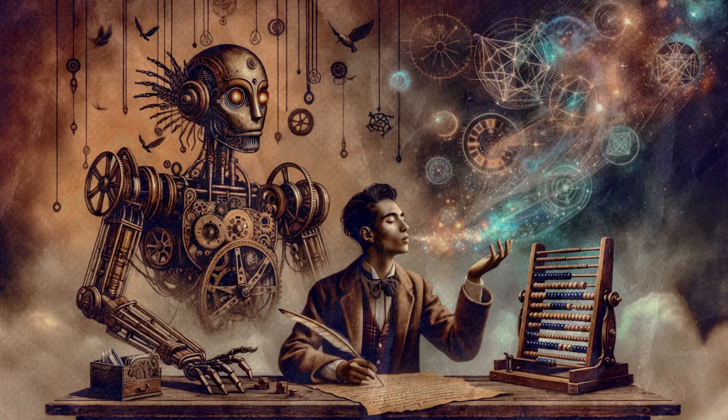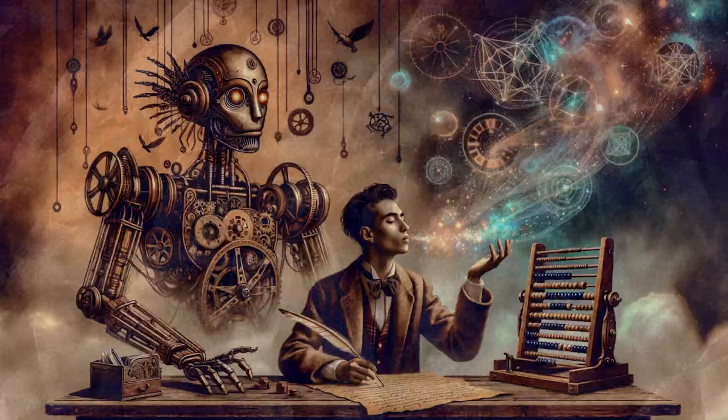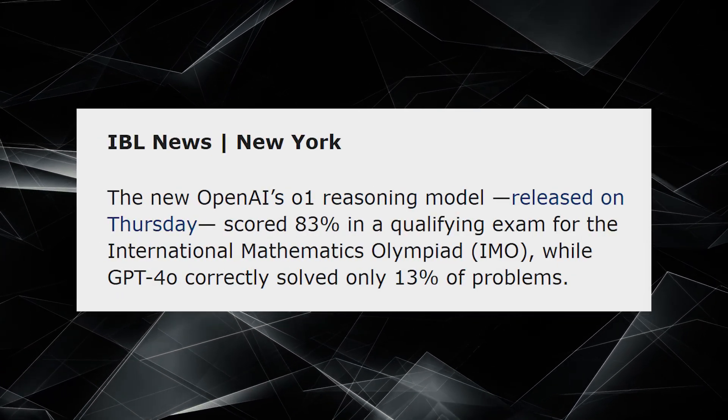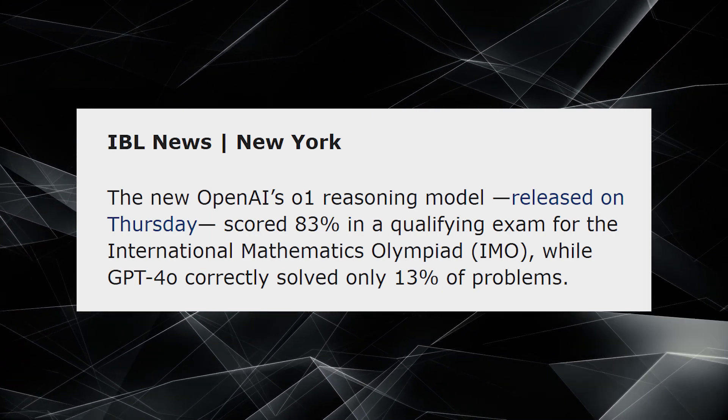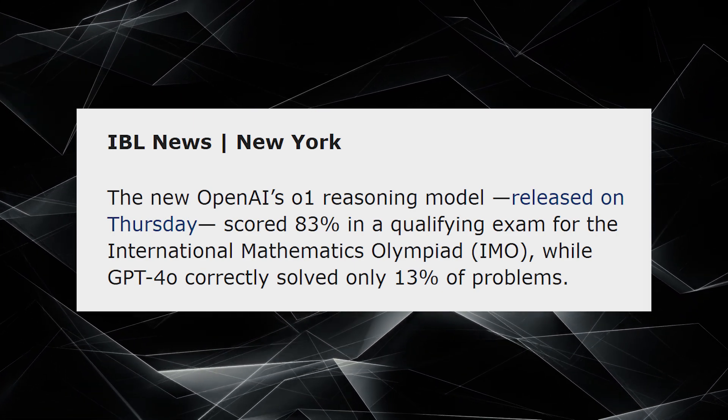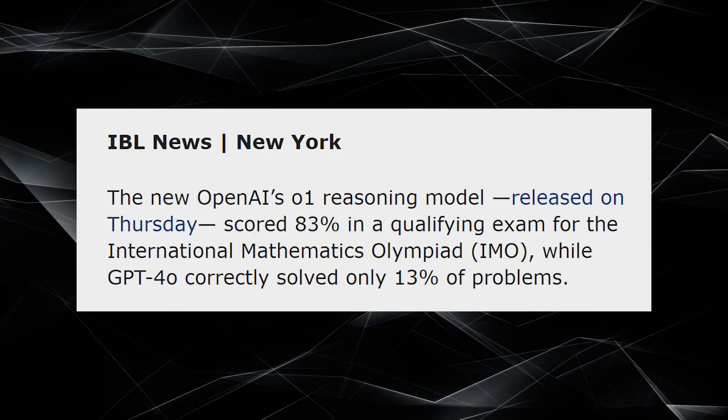You might be thinking, PhD-level AI? Sounds like marketing, right? But it's actually backed by some serious testing. For example, during the International Math Olympiad IMO qualifiers, Zero-One preview solved 83% of the problems compared to GPT-4, which solved just 33%. That's a massive leap in what AI can do in specialized domains.